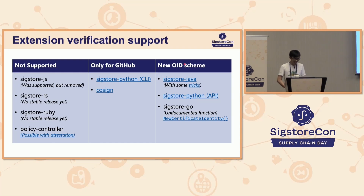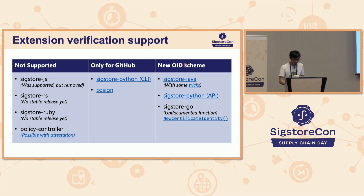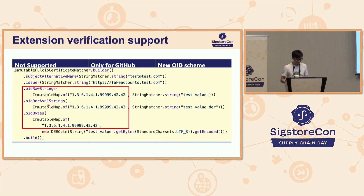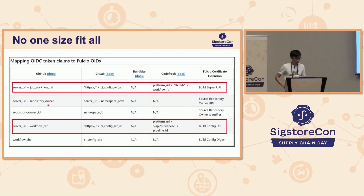For Sigstore Java it's very surprising — I found it supports OID scheme verification, but with some tricks. As Samuel mentioned in the previous talk, there's a struggle handling OIDs. Sigstore Java pushes this responsibility to users: they need to know the OID extension and the data format — whether it's an ASN.1 string or a raw string — in order to verify the Fulcio certificate. Which is very impressive.